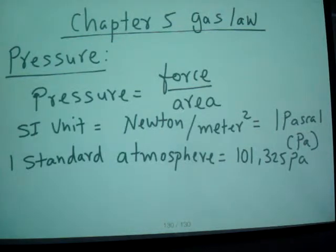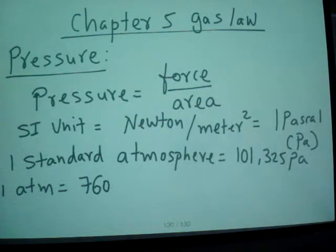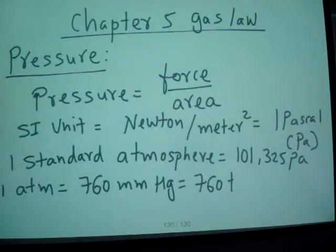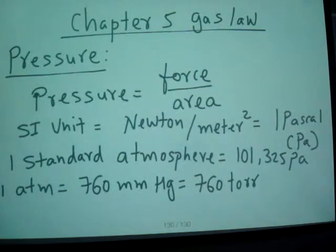And when you convert, let's say one atmosphere equals 760 millimeters of mercury. We are talking about all those units - 760 torr. So those are the units.